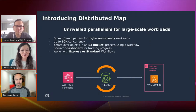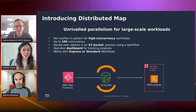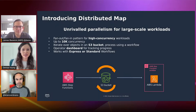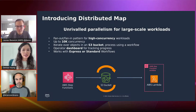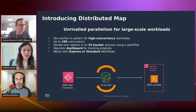That leads us to the launch earlier this month, where we introduced the new distributed map to achieve large-scale parallelism for large data sets. We support fan-in and fan-out processing with up to 10,000 concurrent executions. We made it simple to reference and iterate over objects in S3 buckets or large files in S3, provided a visual operator dashboard to track progress of each parallel execution, and made it easier to nest different workflow types — allowing you to process data using either Express or Standard workflows.